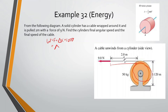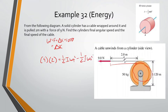Work equals force times displacement times cosine θ, and total work also equals the change in kinetic energy. The tension did work: 9 newtons over 2 meters in the same direction, so work = 18 joules. This equals ΔKE = 1/2 I ω_final² − 1/2 I ω_initial². Since it wasn't moving at the beginning, the initial KE is zero.